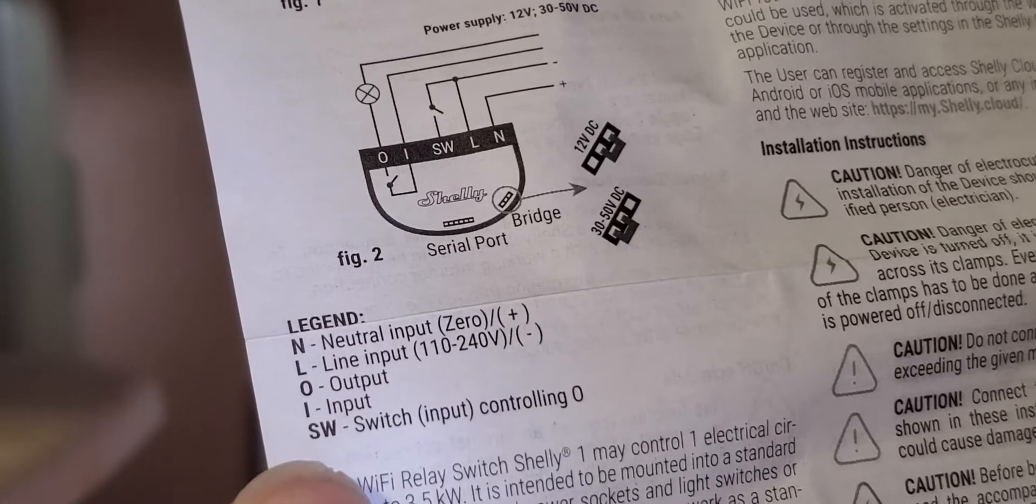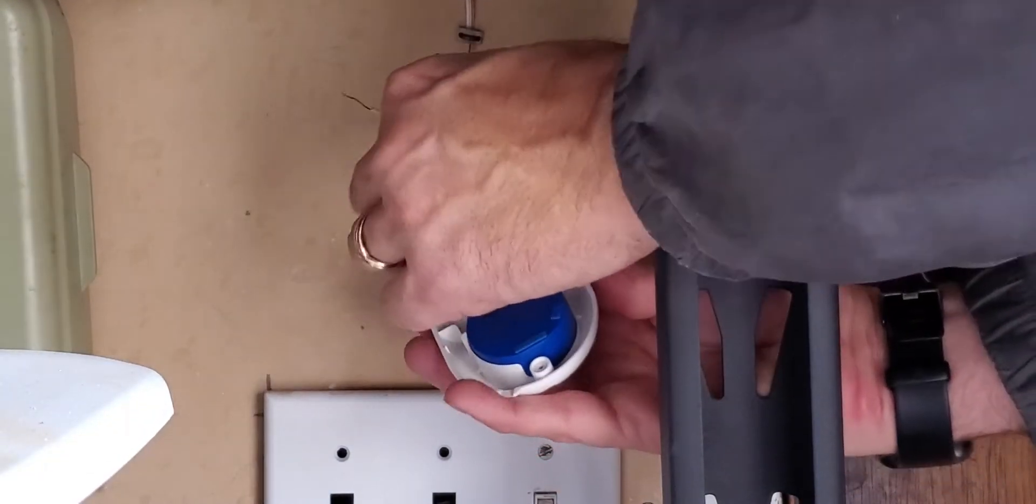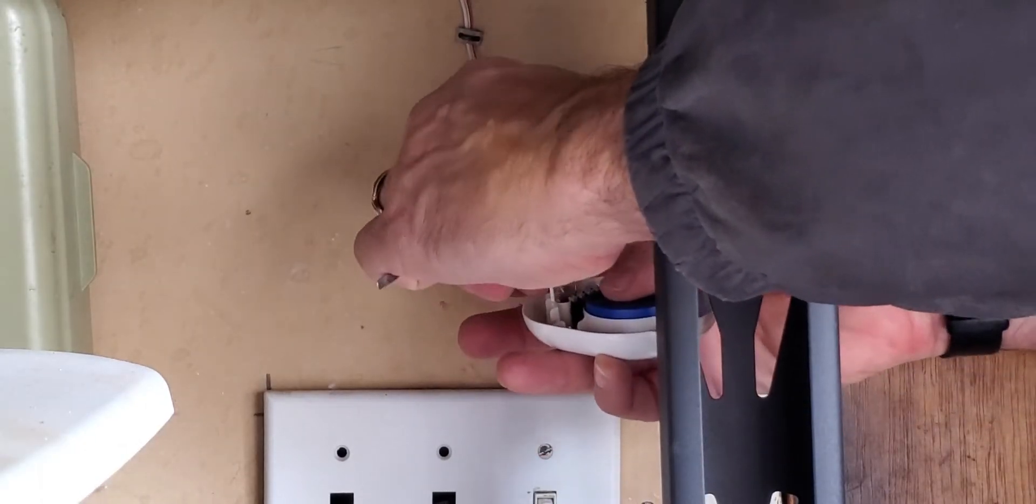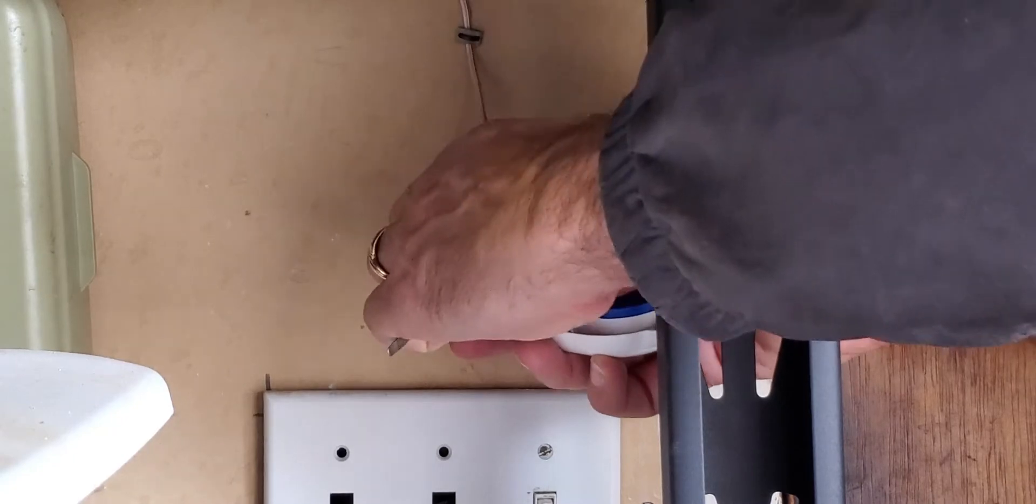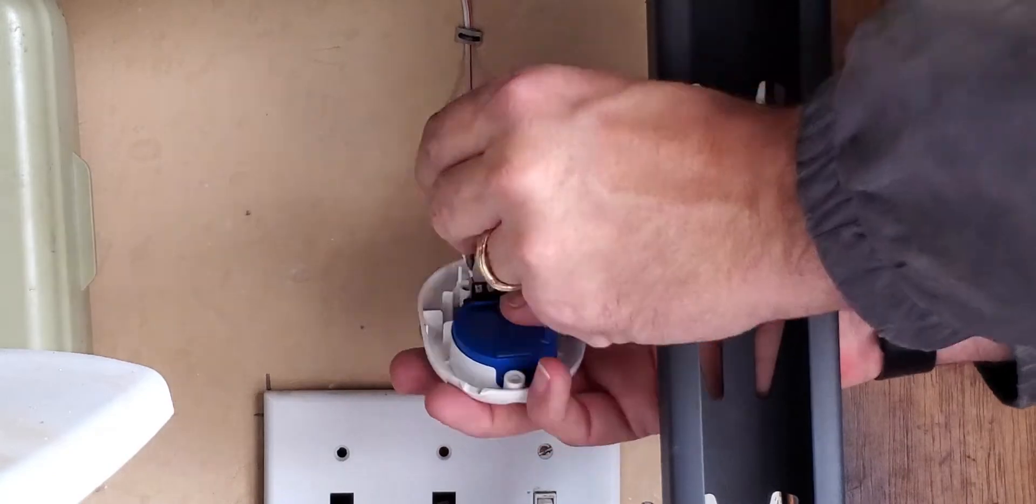The next step is to connect the wires that used to connect to the switch to the I and the O terminals of the Shelly one. Once you've assembled this and you find that your garage door doesn't open, the chances are that these terminals are in reverse order. You may have to swap these.